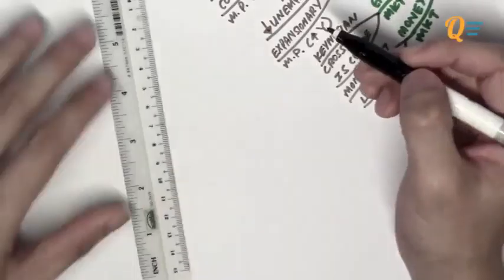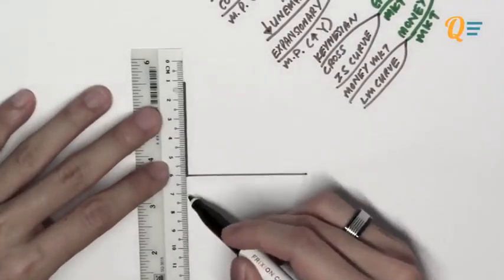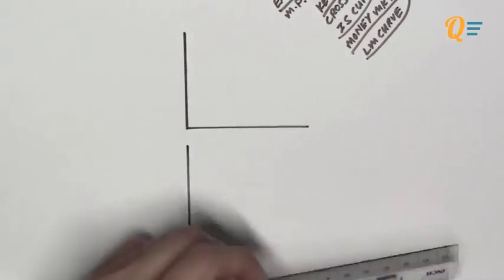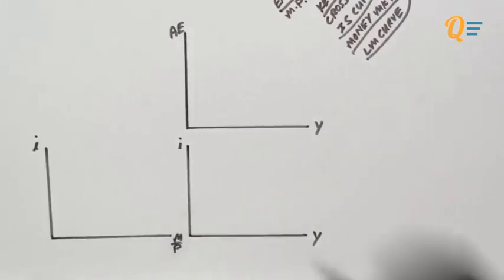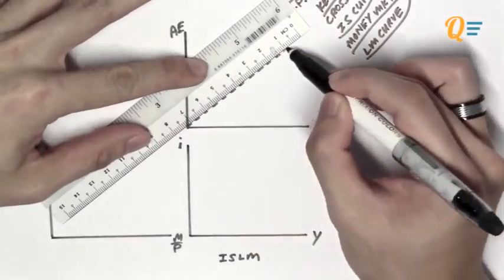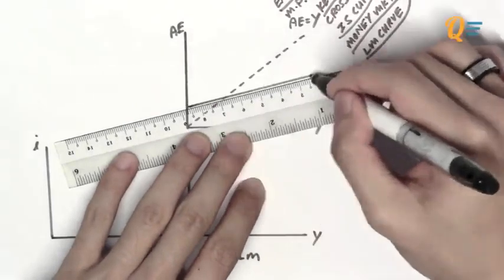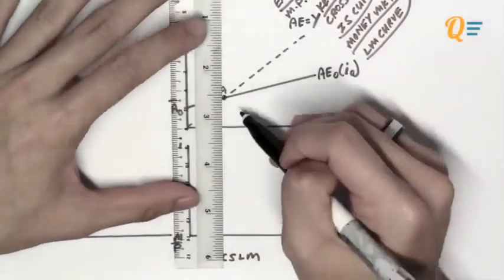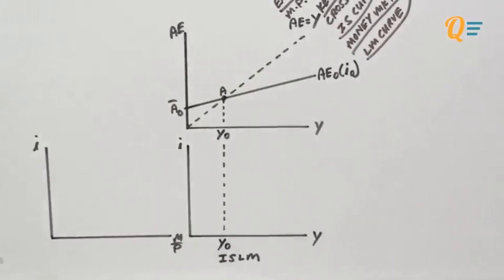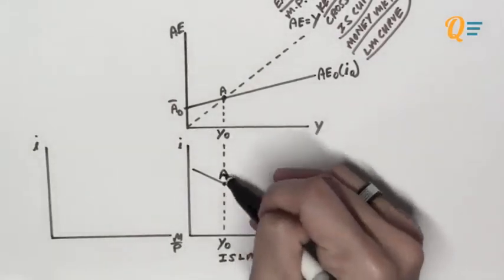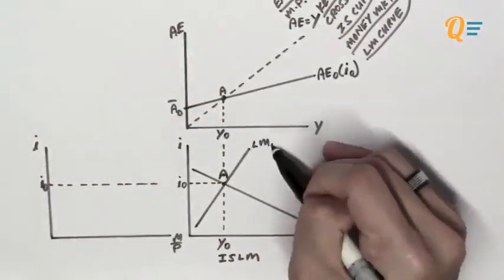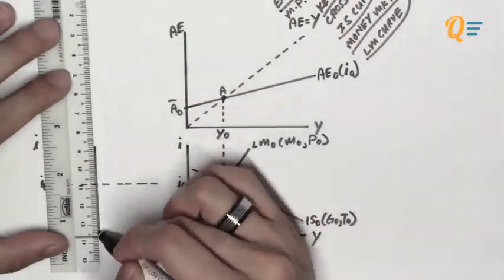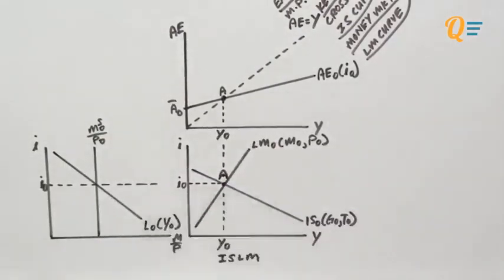Let's look at the diagrams. I'll set up the initial equilibrium: there's an ISLM model, with the Keynesian cross diagram on top and the money market model on the left. Note that you do not need to show the Keynesian cross or money market diagram in exam questions — the most important part is the dynamics within the ISLM model itself. These surrounding diagrams are just to facilitate your understanding of the ISLM mechanics.